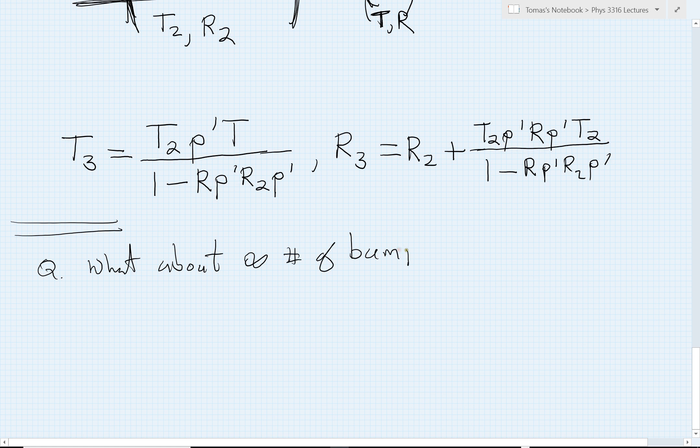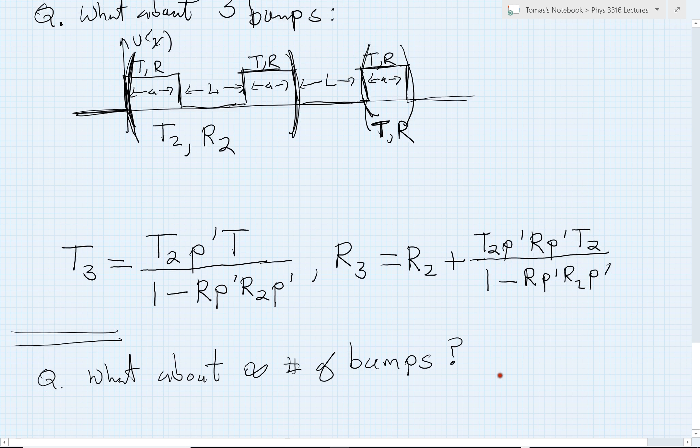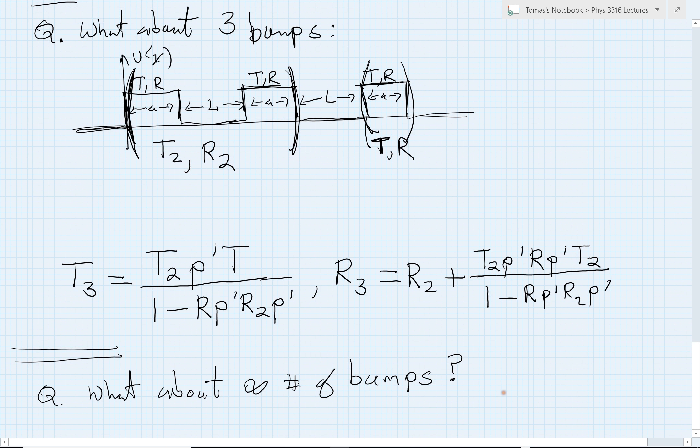We're going to need some way to figure out what the transmission and reflection coefficients are going to be when I take the number of these potential bumps, these inverted square well bumps, to infinity. So you might want to pause and give a little thought about that one. How might we handle that?